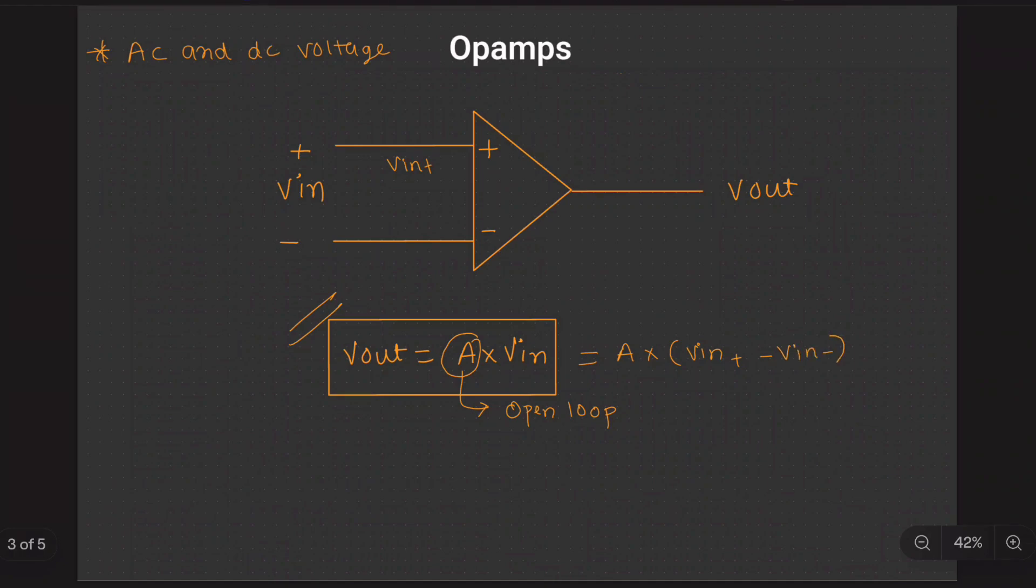The difference of the input into the gain will give the Vout. This op-amp is widely used in many applications and the device in the analog electronics.